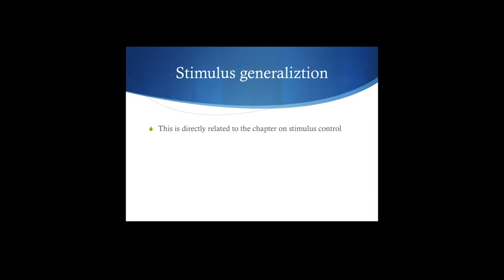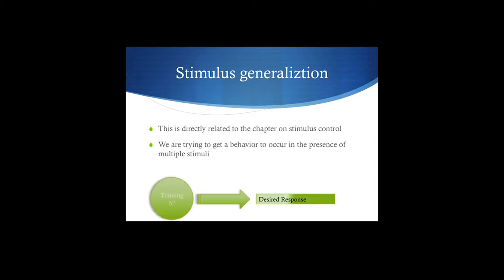The first thing we want to look at is stimulus generalization. This is really part of stimulus control — it's kind of an extension of that chapter. We want a particular behavior to occur in the presence of multiple stimuli rather than just the same old one.